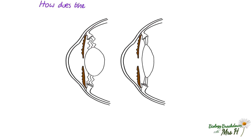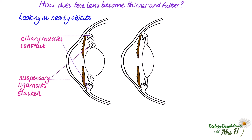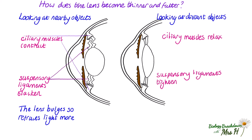How does the lens become thinner and fatter? The lens is attached to the ciliary muscle by the suspensory ligaments. When looking at nearby objects, the ciliary muscle contracts, which allows the suspensory ligaments to slacken. This causes the lens to bulge so the light passing through is refracted more. When we look at distant objects, the ciliary muscles relax and the suspensory ligaments pull tight. This causes the lens to go thin and therefore refracts light less, or by a smaller amount.